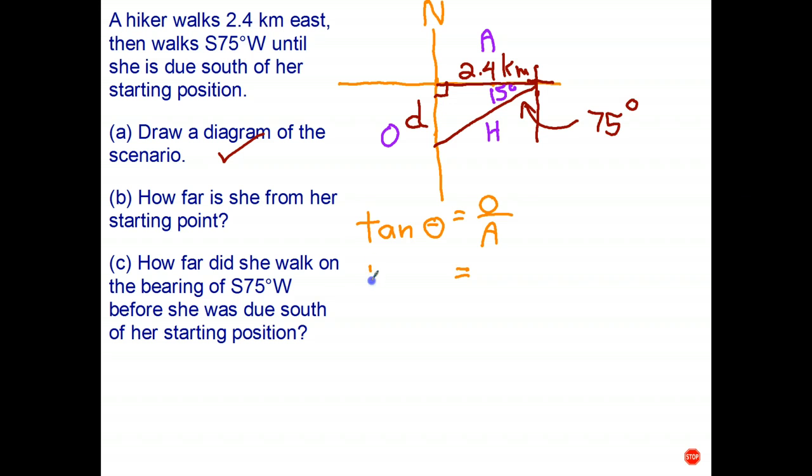Let's put in everything that we know. So tan of 15 degrees. The opposite side is what we're looking for. The adjacent side is what we know. Let's write the d on the left. We multiply both sides by 2.4 and that gives us 2.4 tan 15.